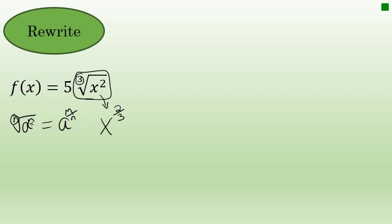So f of x equals 5 times the cube root of x squared is equivalent to 5 times x to the 2/3 power.